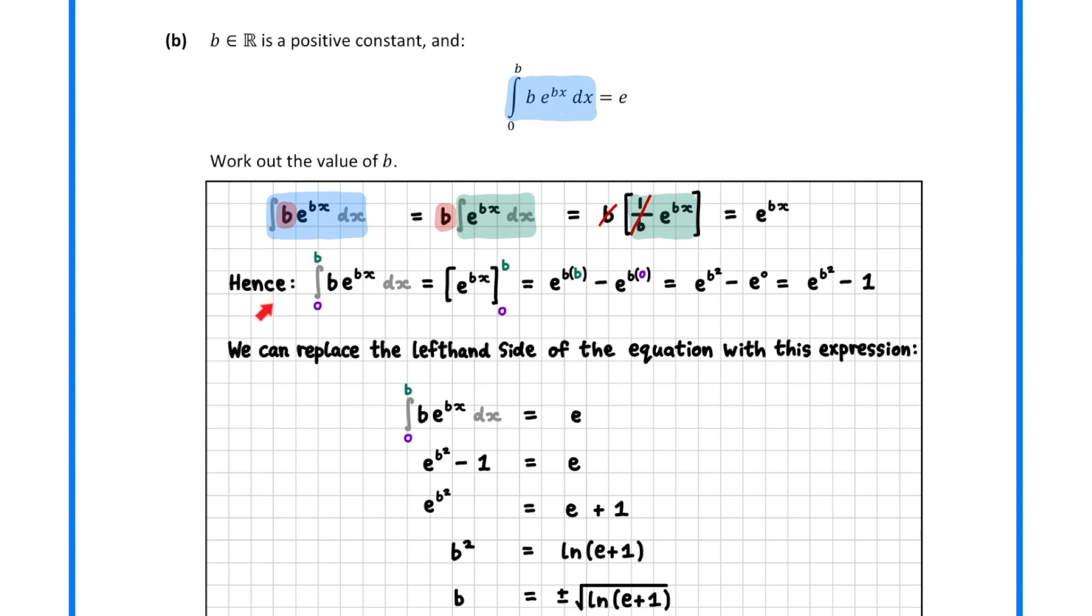To find the definite integral, we need to sub in the upper limit of b, sub in the lower limit of 0, and then subtract. Simplifying gives us e to the power of b squared minus 1.